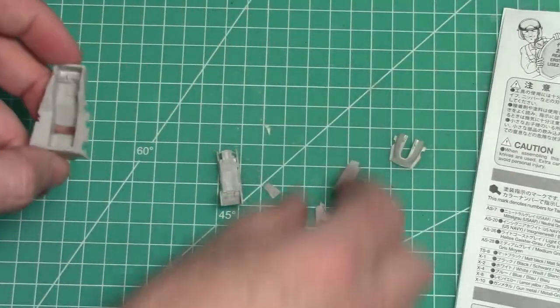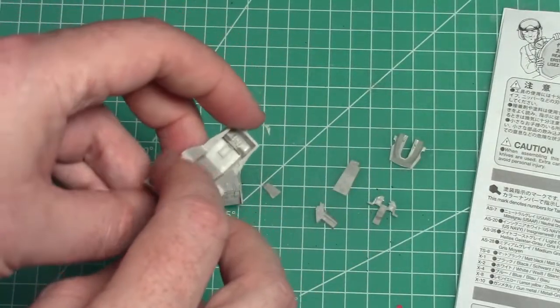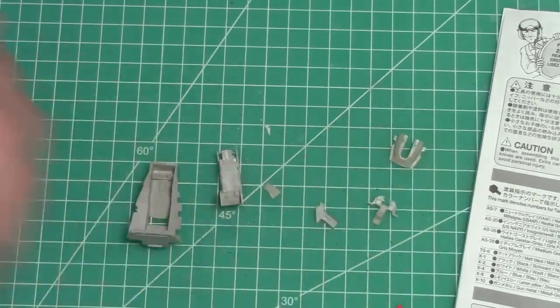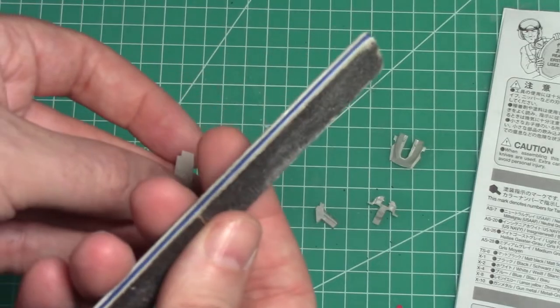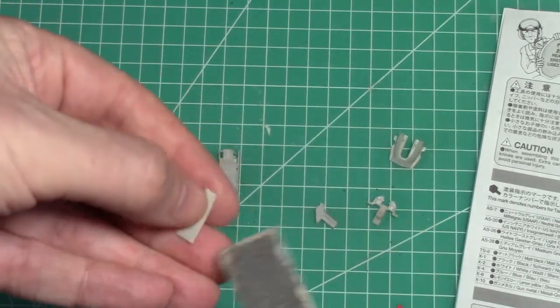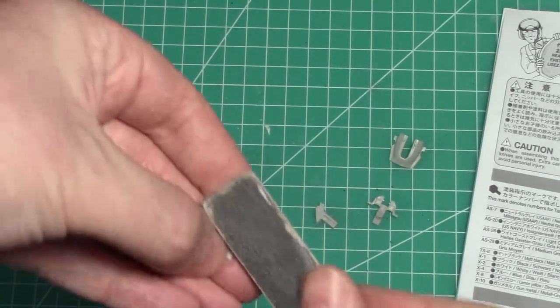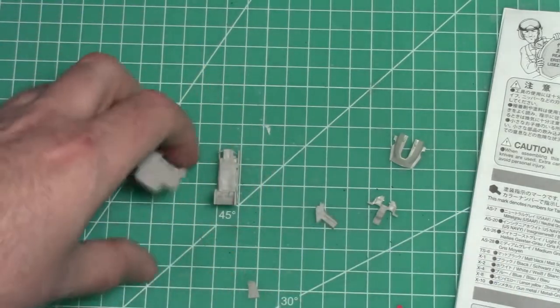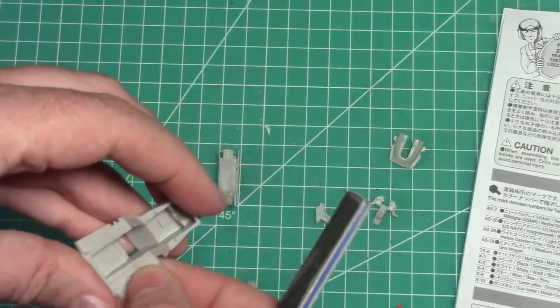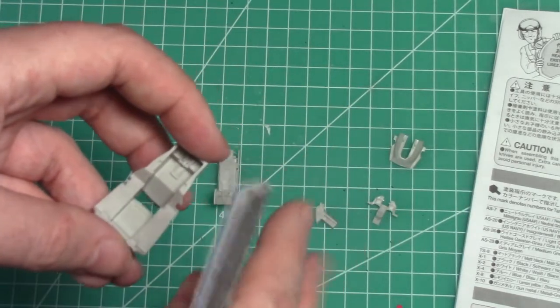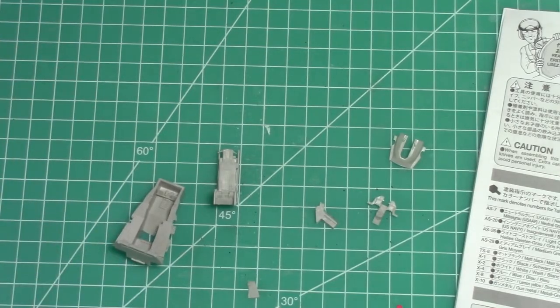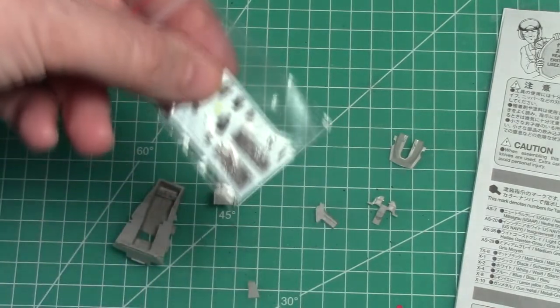So part number 1 here is the cockpit tub and you see I've sanded some detail off here and on the other side. These two pieces I'm just going to take a medium sanding stick and sand off the detail which I've started already, and just glue them in place. Once those 4 pieces are glued in place I'm just going to give it a quick coat of dark gull grey and then we can start applying these guys.